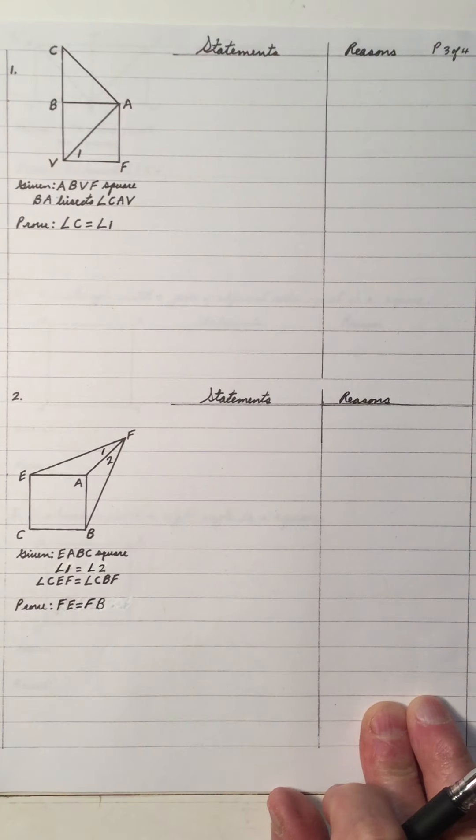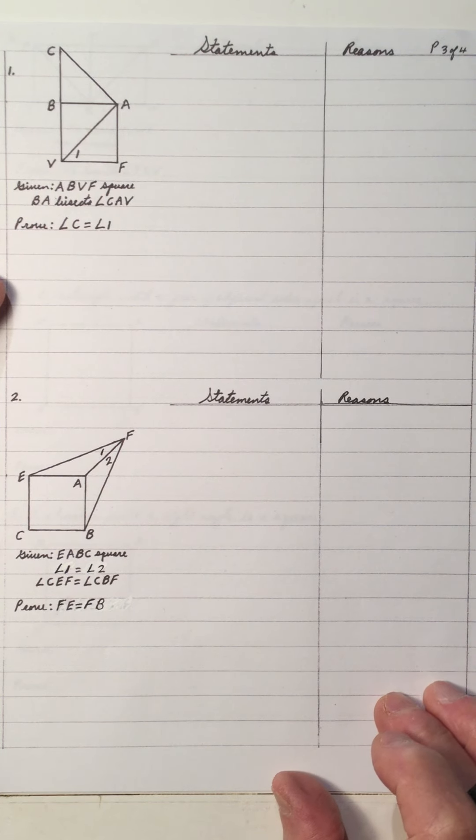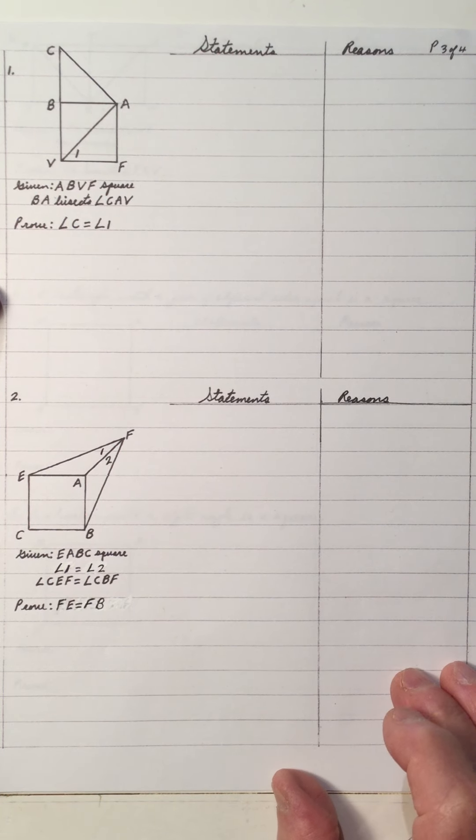Hence, triangle MOA is a right isosceles triangle by the definition of a right isosceles triangle — we have two equal sides MO equals AO from step 12, and a right angle from step 4 making it a right triangle. So that proof is done. Take your time with proofs, organize them — and we have some more to do.